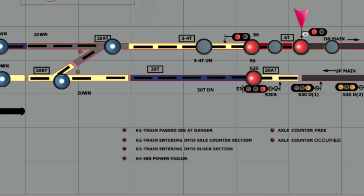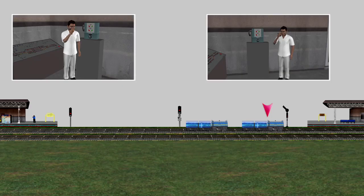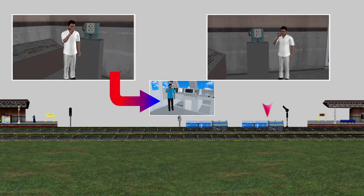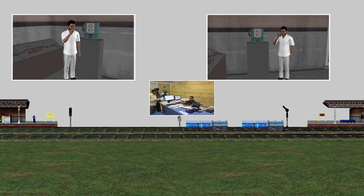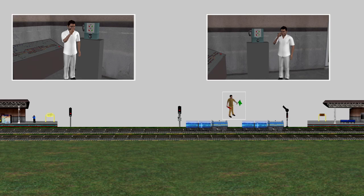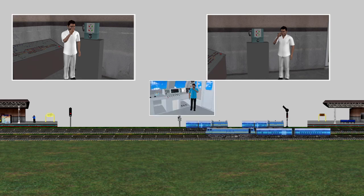When the loco pilot passes the IB signal, the rear station master will get a K1 buzzer. If there is another train in the IB section, the station master shall inform the loco pilot through the traction power controller, gate man if a gate is available, or communicate to the loco pilot of the adjacent line through a caution order.